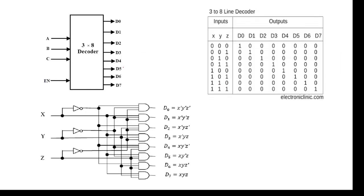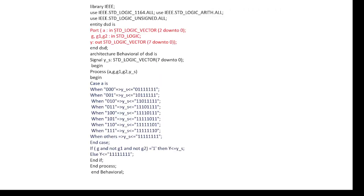Coming to the circuit, you can see this 3-to-8 decoder has 3 inputs and 8 output lines. When the input is 000 we get one output, when 001 we get another output, and so on. In our program we are using 3 enable signals: G, G1, and G2. The input A is 2 down to 0, giving 8 possible input combinations, and Y is the output.